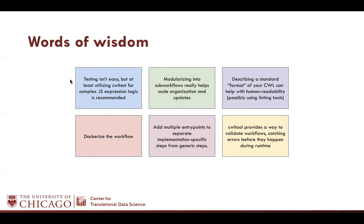We have some experiences we want to share. Testing isn't easy, especially for all the steps in CWL. But we are trying to utilize CWL tests for JavaScript expression logic, and internally we started to dockerize all the workflows and included CWL tests in the CI process, which helps us distribute and share our workflows. Modularizing into sub-workflows really helps with code organization and updates, and some sub-workflows can be different entry points to separate implementation-specific steps from generic steps. In GDC we always have two entry points for one workflow — one for GPASS and one for general users.